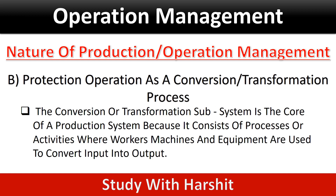Production operation as a conversion or transformation process: the conversion or transformation subsystem is the core of the production system, because it consists of processes or activities where workers, machines, and equipment are used to convert input into output.